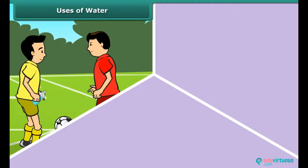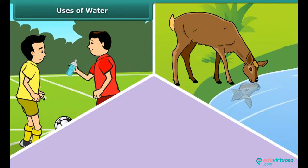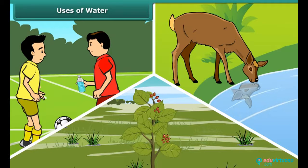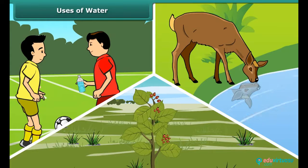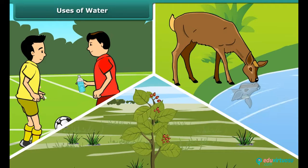Water is an essential part of human, animal and plant life. Living things cannot live without water. It is said that life originated in water and gradually shifted to land, but the connection and importance of water still remains the same. Water is essential for every living organism to grow and flourish.